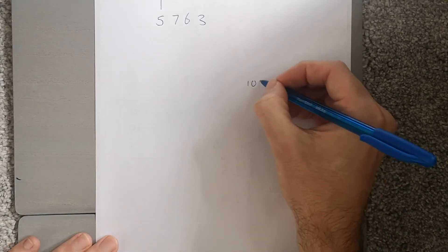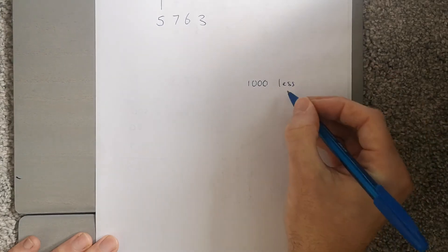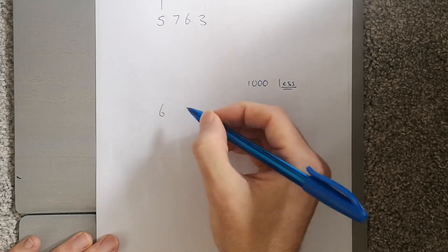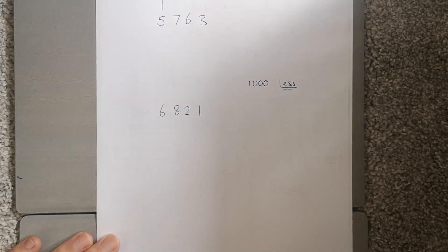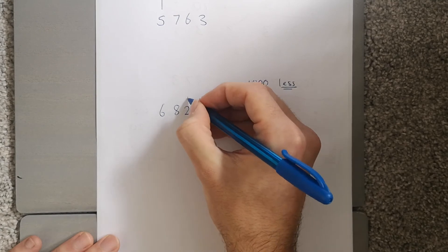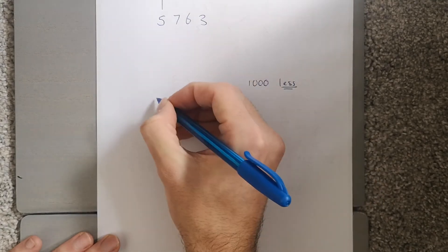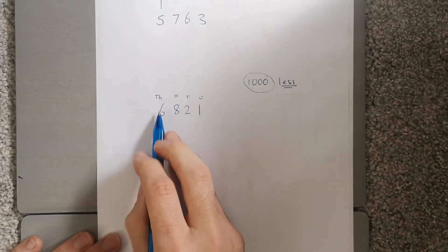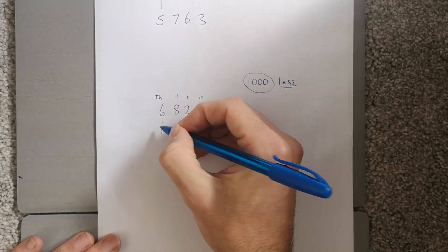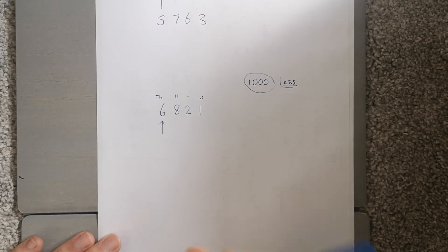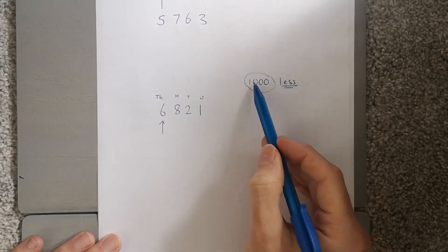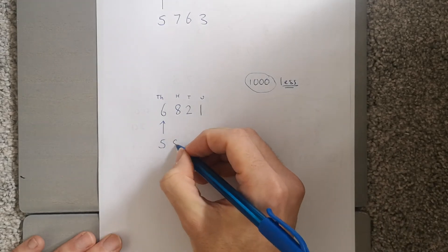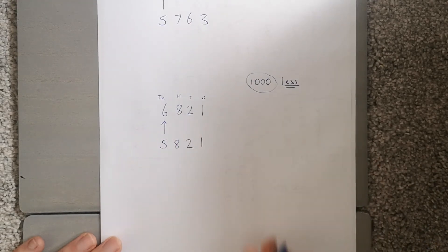It's the same if I'm going a thousand less. Let's take the number 6821. Same thing — units, tens, hundreds, and thousands. Because I know I'm going a thousand less, I'm looking at the thousands column. I draw a little arrow, and because I'm going less I'm only going down one, bringing me down to 5. The rest of it all stays the same.